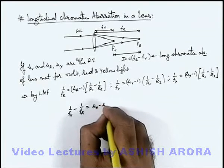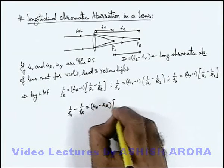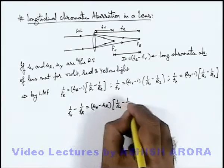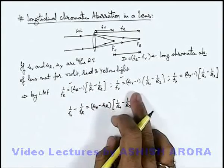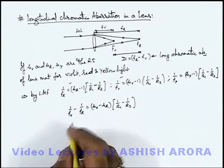mu_v minus mu_r multiplied by 1/r_1 minus 1/r_2. I am using these two equations and we are subtracting the two. On simplifying this we are getting